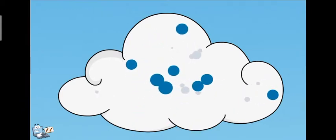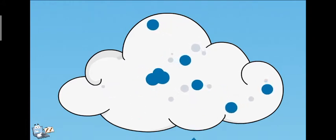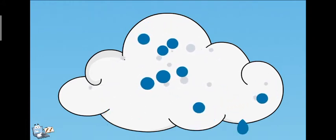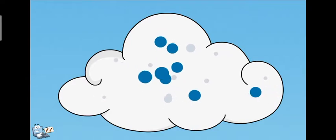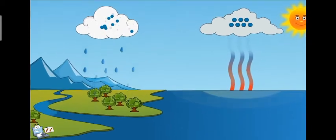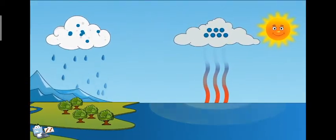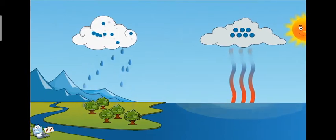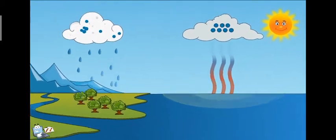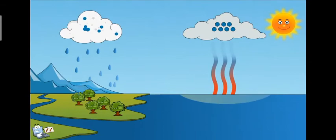The water droplets come to the ground and the rainwater flows back to the rivers, lakes, ponds, and sea. It is raining and the water goes back to the pond, and then again the same process repeats. This is called the water cycle.